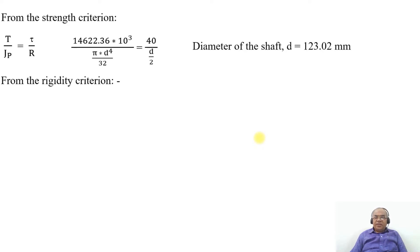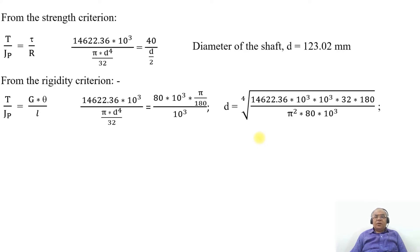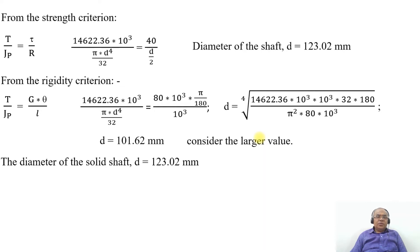From the rigidity criterion, T/J = Gθ/L. Substituting T = 14622.36 × 10³, J = πd⁴/32, G = 80 × 10³ N/mm², θ = π/180 radians, and L = 10³ mm. Solving for d gives the fourth root expression, yielding d = 101.62 mm. Comparing both criteria: strength gives 123.02 mm and rigidity gives 101.62 mm. We consider the larger value, so the diameter of the solid shaft d = 123.02 mm.